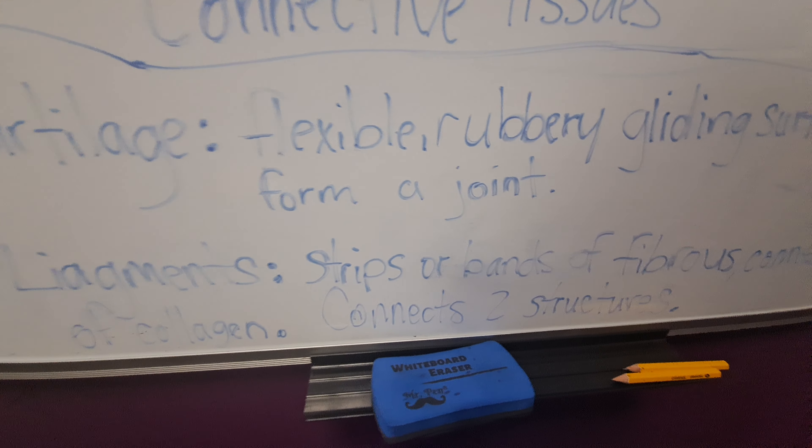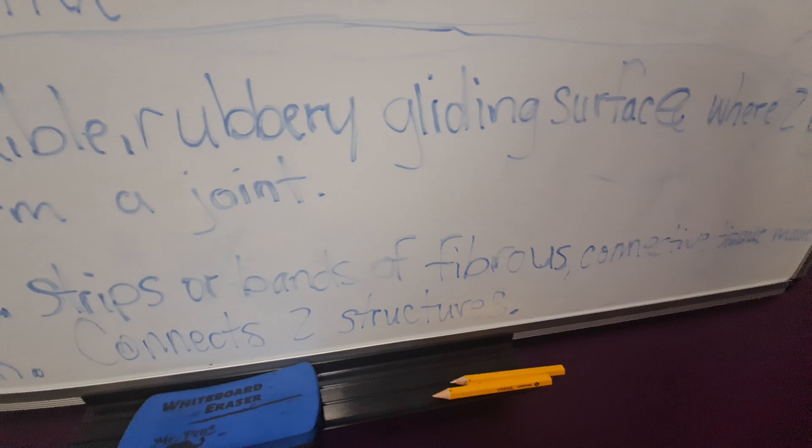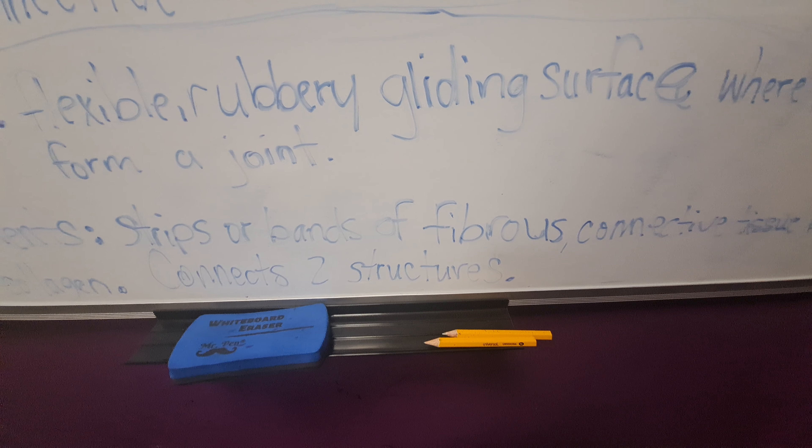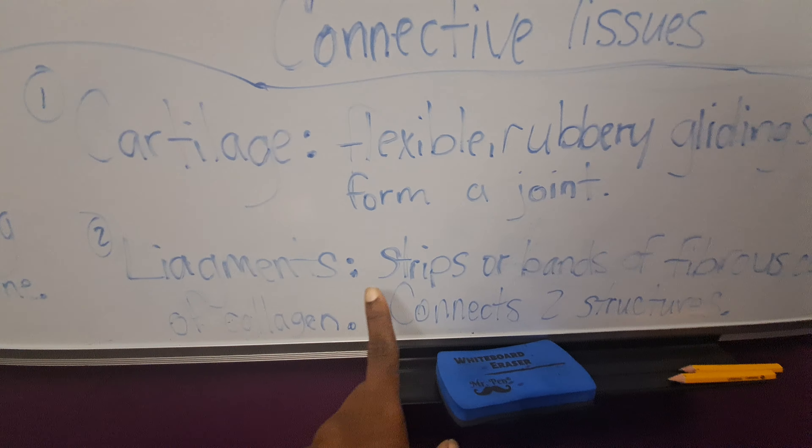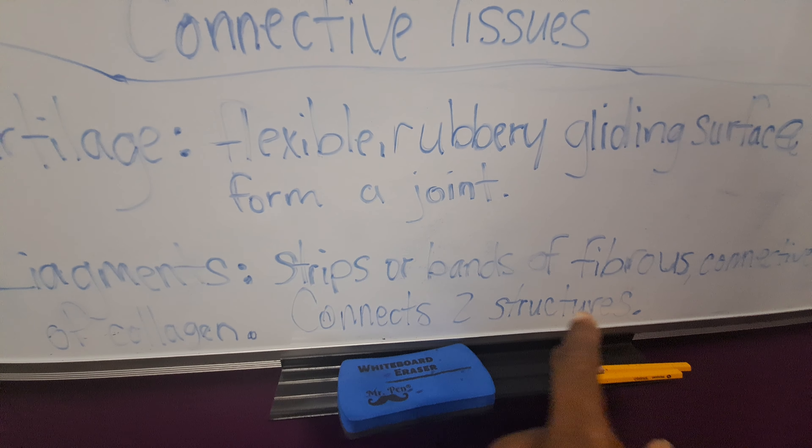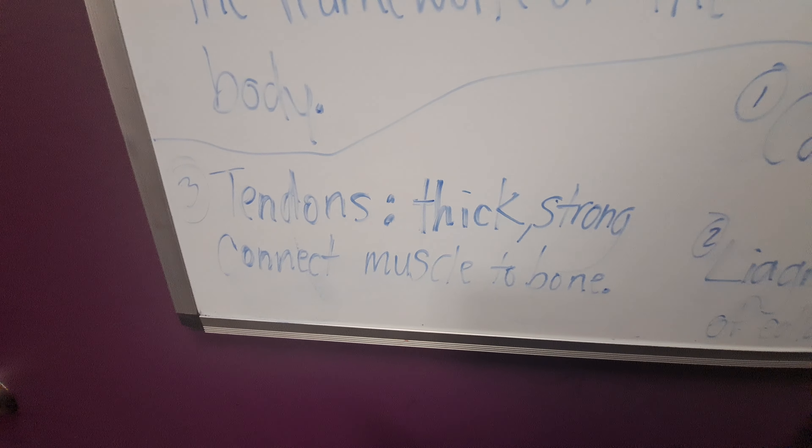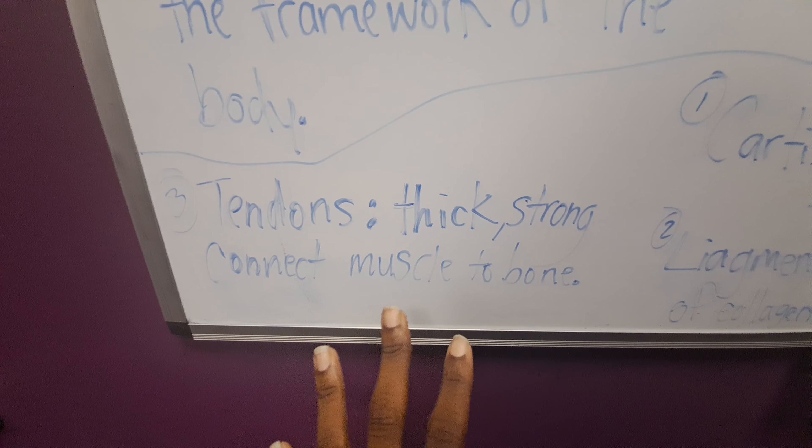Ligaments are strips or bands of fibrous connective tissues made of collagen and they connect two structures. Tendons are big, strong connective tissue that connect the muscle to the bone. So cartilage is flexible and rubbery, ligaments are strips or bands, and tendons are really strong and connect muscle to bone.